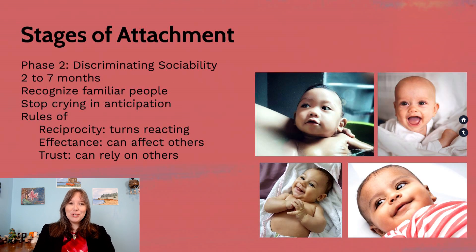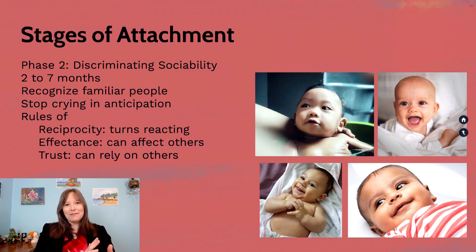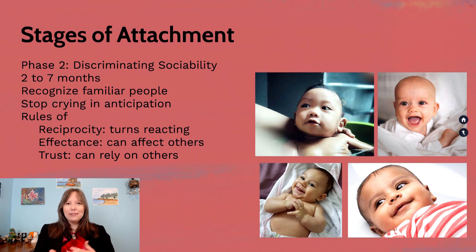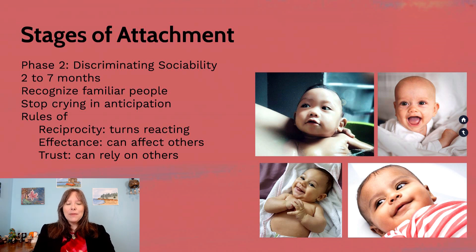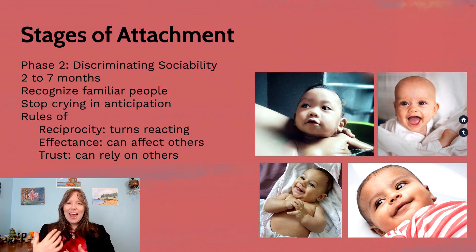According to John Bowlby, stage two is the discriminant sociability stage, and this starts around two months of age and goes to about seven months of age, though there is some individual variance. In this stage, babies start to recognize familiar people. They might see their parents or grandparents and anticipate them and smile more. They may be able to anticipate what the person is going to do if they have a certain way of moving or talking around the infant. They start to recognize people to the extent that they may stop crying when they anticipate that person is going to fill their needs — they spent the first stage recognizing the pattern, and now they can use it.